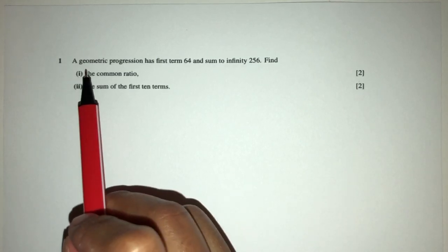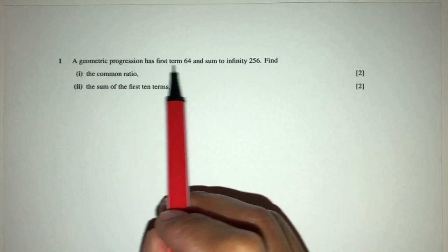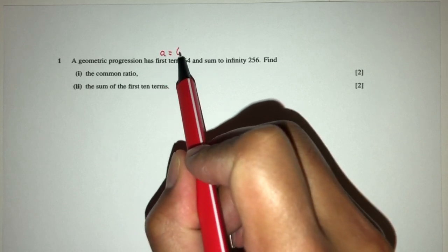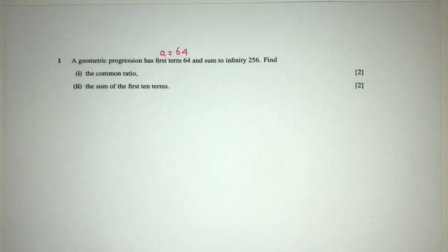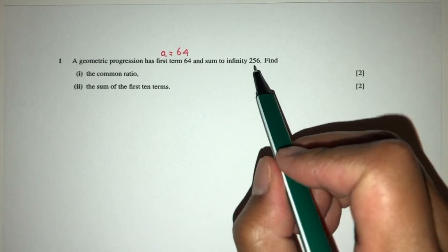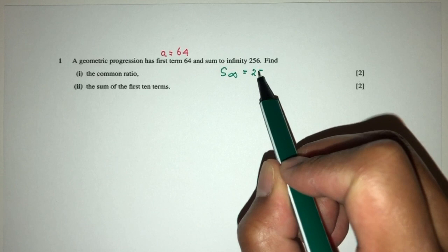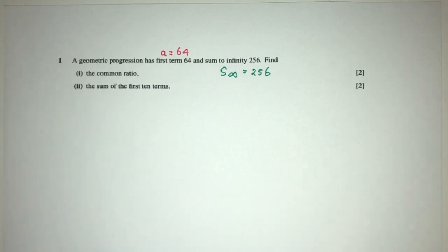Here we have a geometric progression with first term, so we know first term is defined by A. A is equal to 64, and the sum to infinity is equal to this, so we know sum to infinity is given to you by 256. These are the given information.